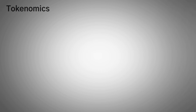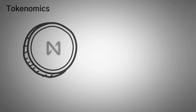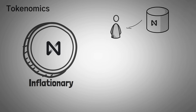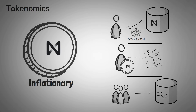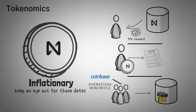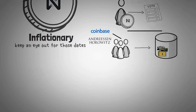Let's get into the tokenomics of the NEAR coin. NEAR is inflationary, with extra tokens coming from around 5% staking rewards. NEAR is also a governance token, meaning new ideas are proposed and voted on by coin holders. Many of the early investors are subject to a locked time period, meaning they are only allowed to sell or transfer their coins after a certain date — so keep an eye out for those dates, as many investors like to sell a portion of their coins to recoup their initial investment. Investors like Coinbase and Andreessen Horowitz back the NEAR protocol, which is always a good sign.